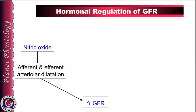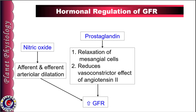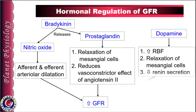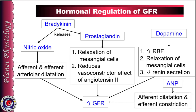Hormones that increase GFR include nitric oxide, produced from macula densa, which causes afferent and efferent arteriolar dilation. Locally produced prostaglandins cause relaxation of mesangial cells, increasing the surface area available for filtration, and also reduce the vasoconstrictive effect of angiotensin. Locally produced bradykinin releases nitric oxide and prostaglandin, further increasing GFR. Dopamine increases renal blood flow, induces relaxation of mesangial cells, and decreases renin secretion by JG cells, all increasing GFR. Circulating atrial natriuretic peptide causes afferent arteriolar dilation and efferent arteriolar vasoconstriction, also increasing GFR.